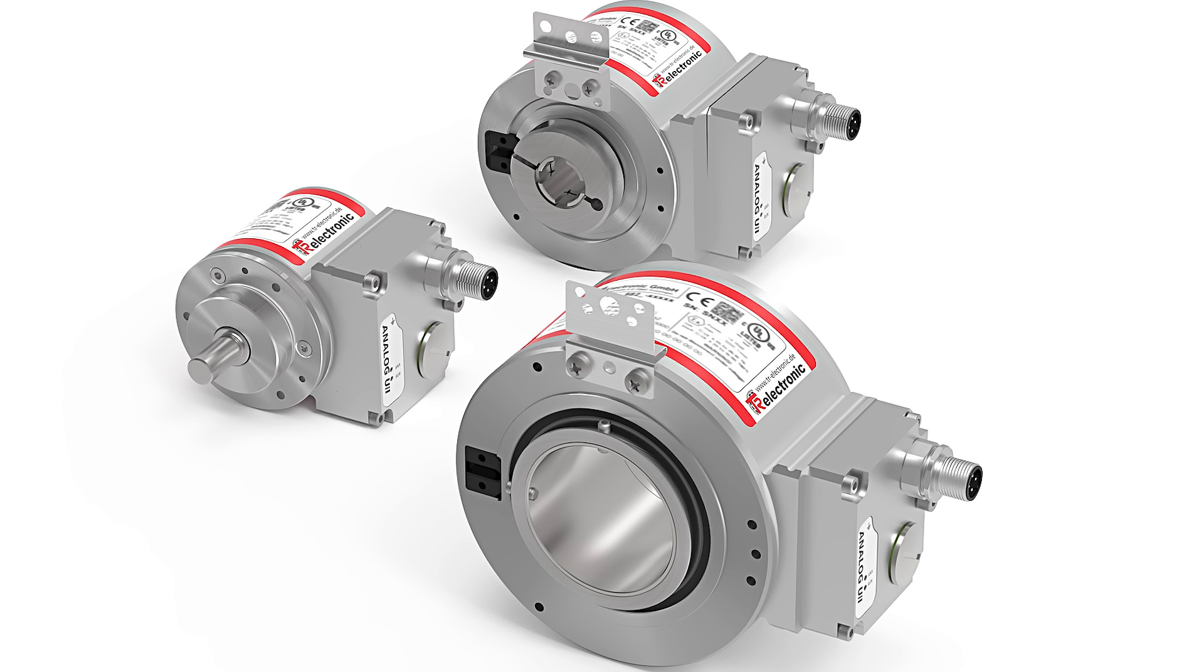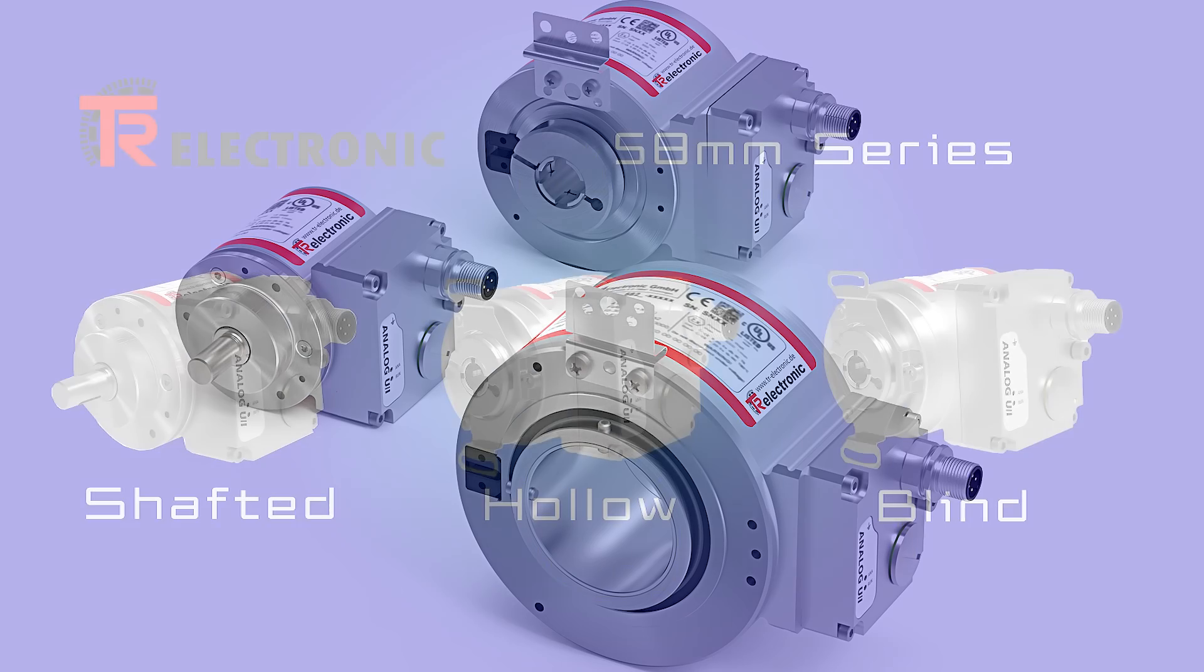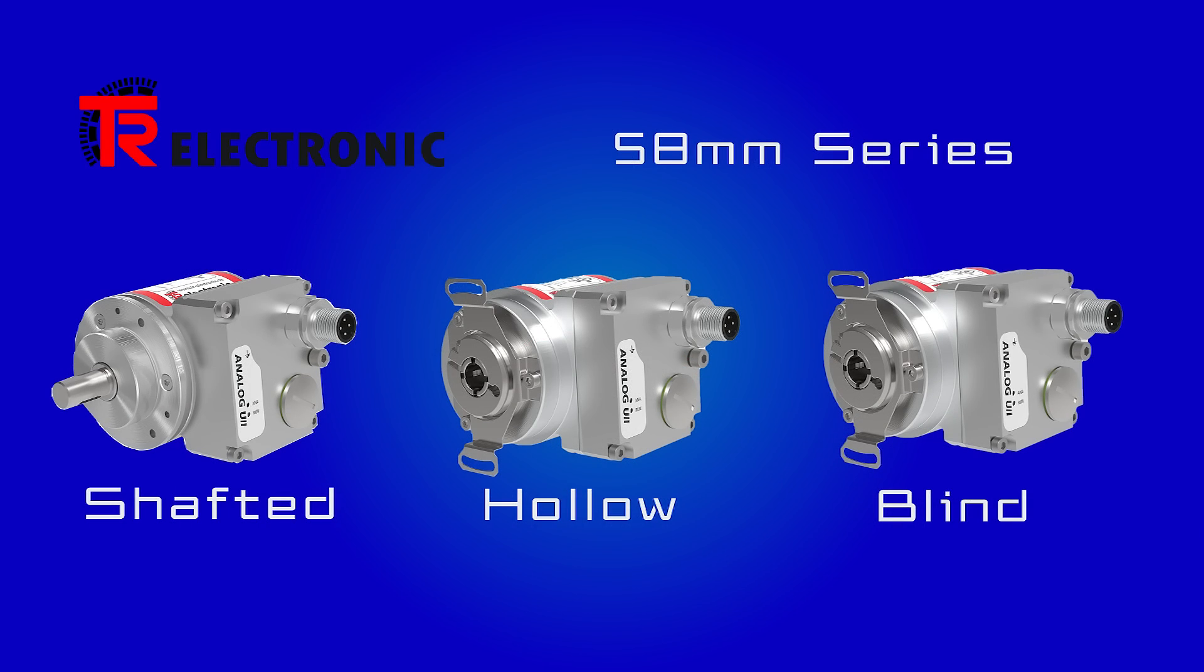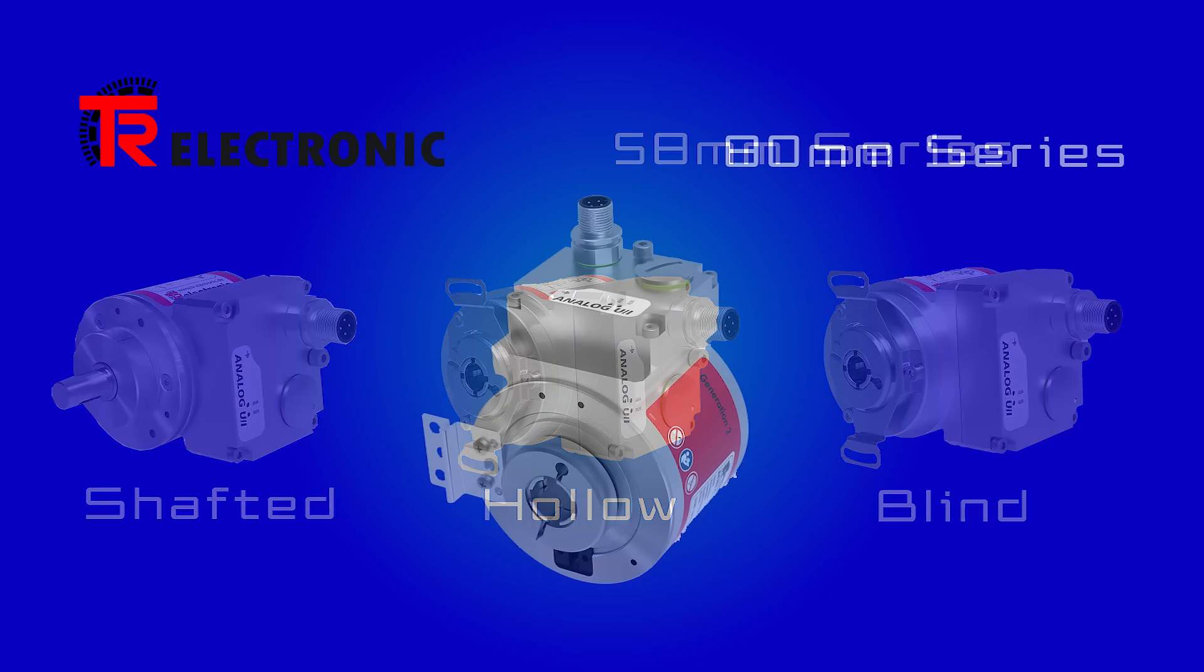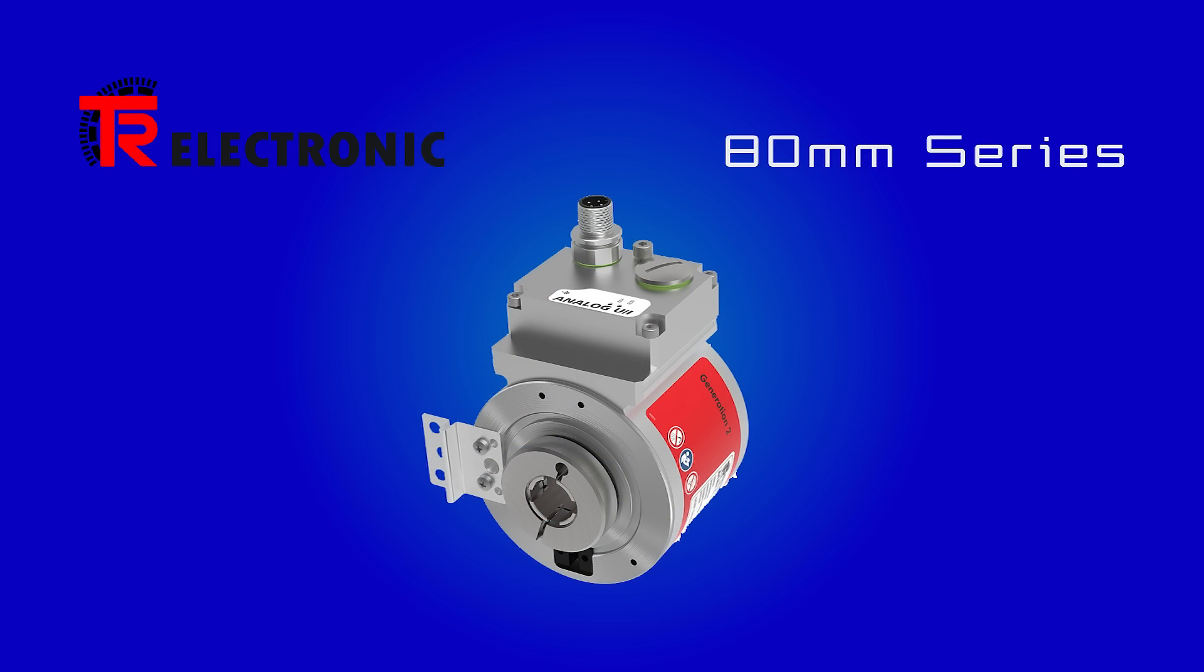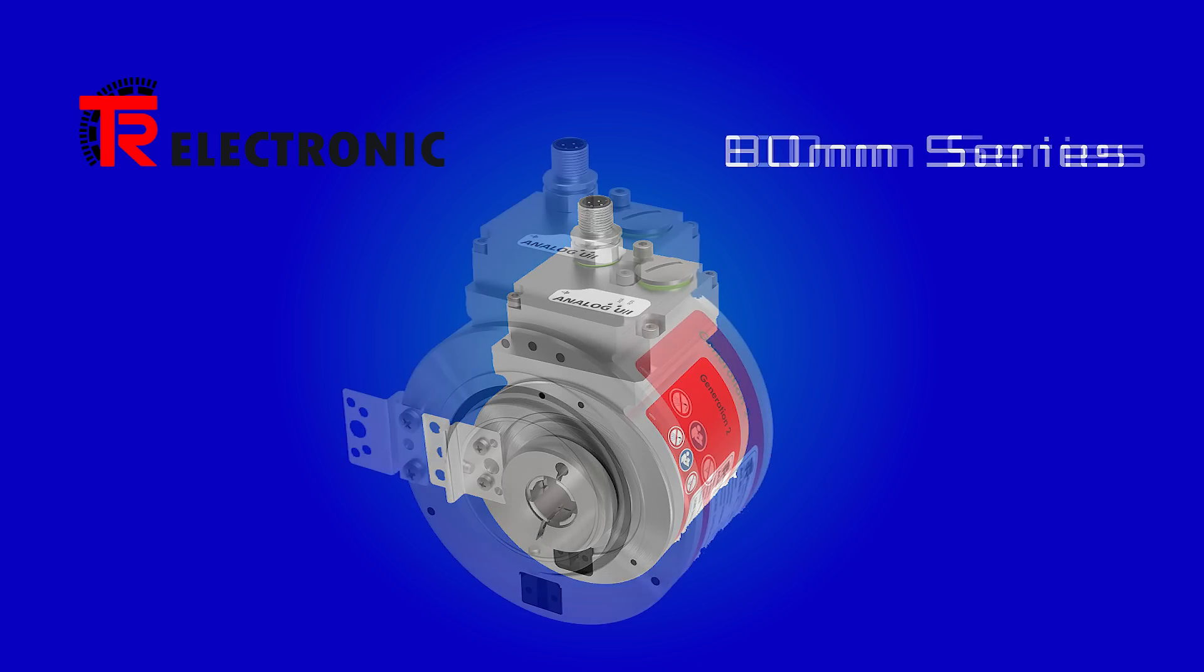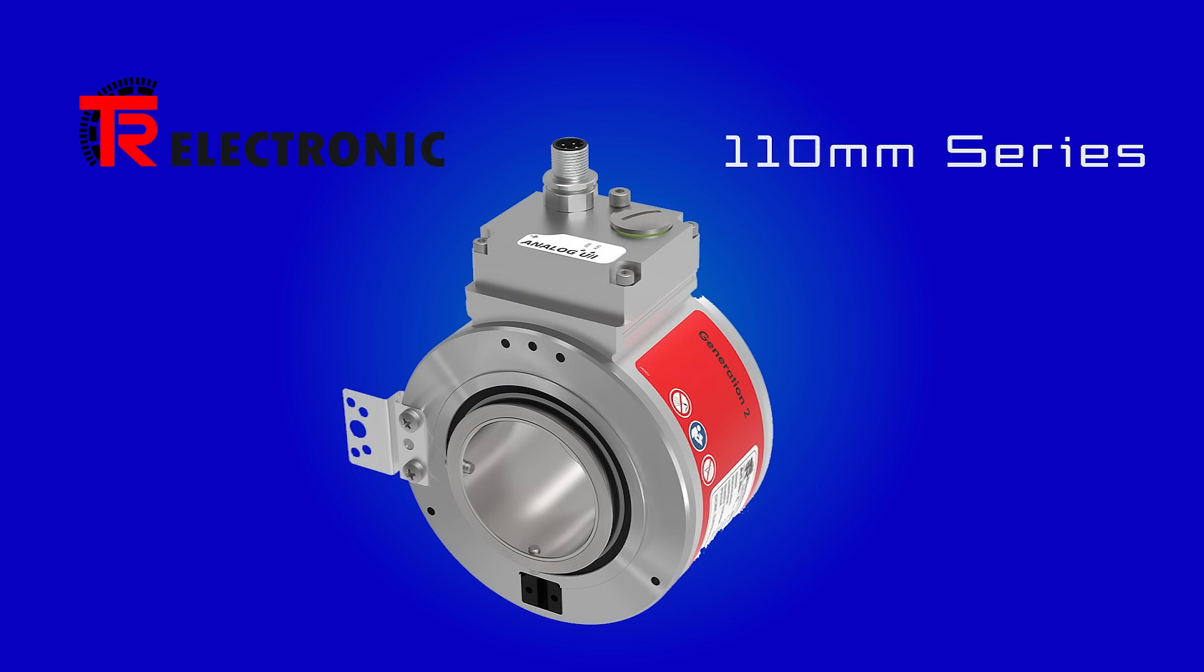The new analog interface is available in three size formats: the 58 millimeter series with shafted, hollow, and blind shaft up to 15 millimeters in diameter; the 80 millimeter series with hollow shaft up to 27 millimeters in diameter; and the 110 millimeter series with hollow shafts up to 50 millimeters in diameter.